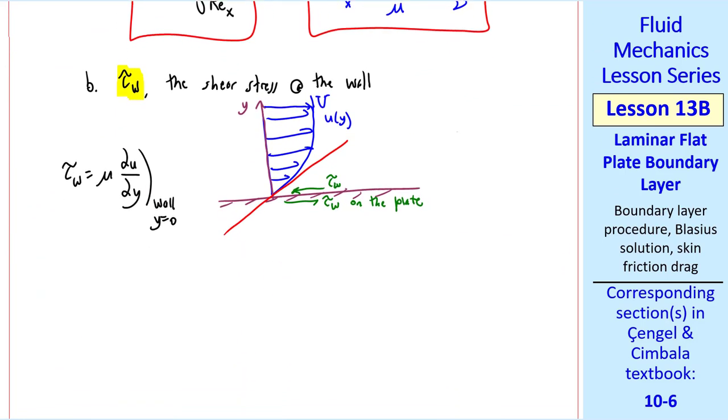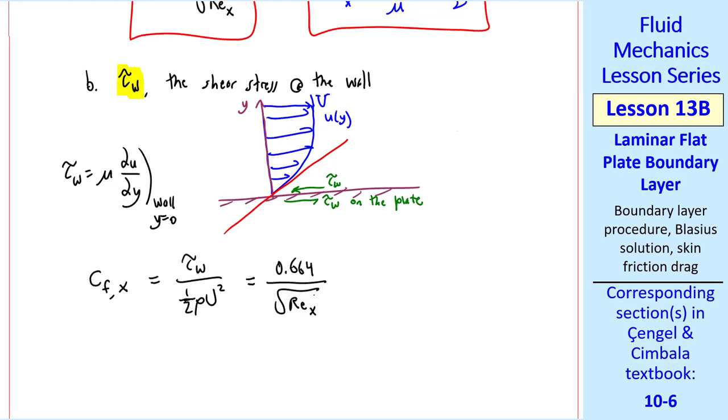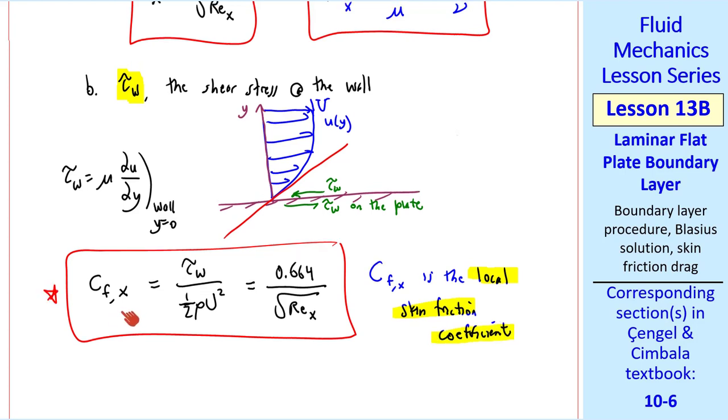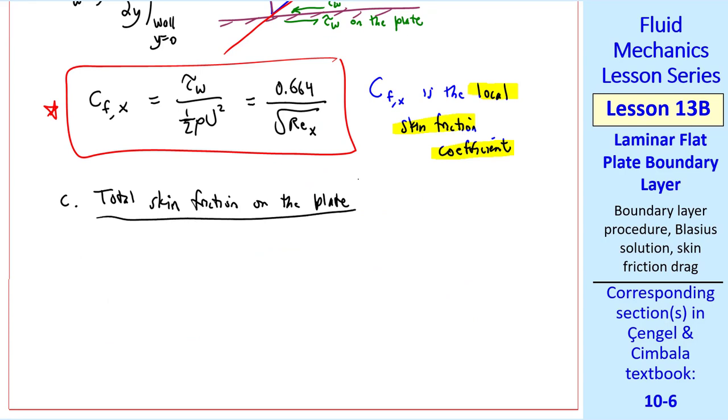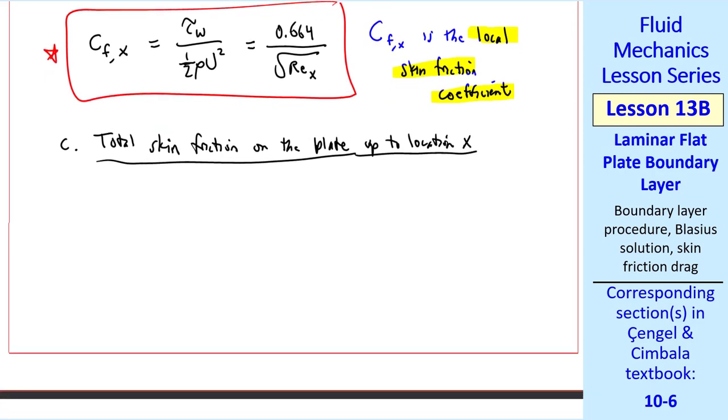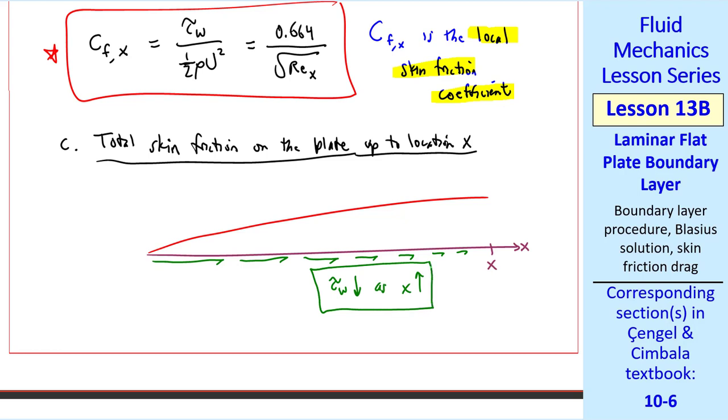And in typical fluid mechanics fashion, we generate a non-dimensional quantity for tau w. CF comma x is defined as tau w over one half rho u squared. And for this flow, it turns out to be 0.664 divided by the square root of RE sub x. CFx is called the local skin friction coefficient. CFx changes with x, as you can see in this equation. We'll also calculate the total skin friction on the plate up to location x. The plate itself is infinite, so the total skin friction would be infinite. But we're interested in skin friction at some location. Here's the plate in our boundary layer. Because REx is in the denominator here, the skin friction decreases as we go downstream. In other words, tau w goes down as x goes up.